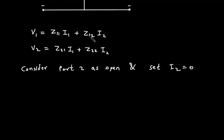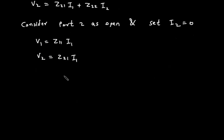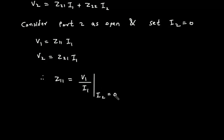So, when I2 is equal to 0, V1 is equal to z11·I1 and V2 is equal to z21·I1. Therefore, z11 is equal to V1 divided by I1 when I2 is equal to 0, and z21 is equal to V2 divided by I1 when I2 is equal to 0.